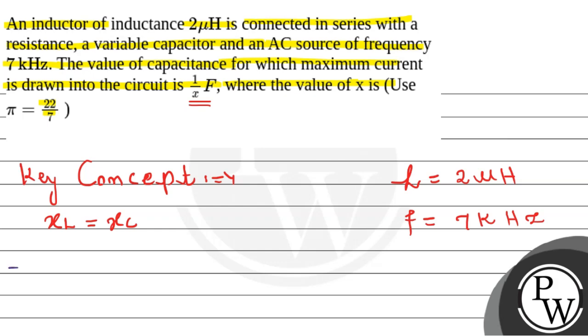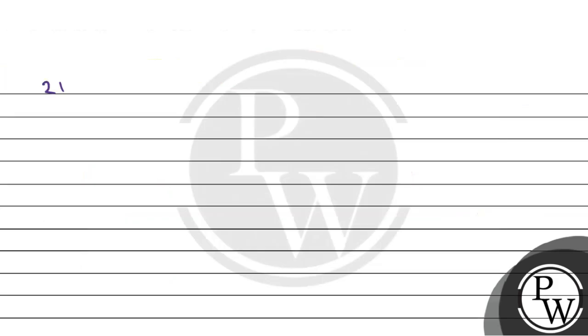Substituting the value of XL, inductive reactance. So inductive reactance is given by omega into L. This will be equal to XC, which can be given by 1 by omega C. Now substituting the value of omega, we remember omega is given by 2 pi f. So substituting right here, we will get 2 pi f L equals 1 by 2 pi f C.